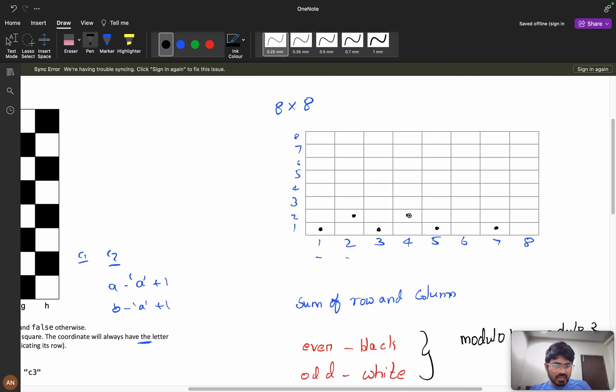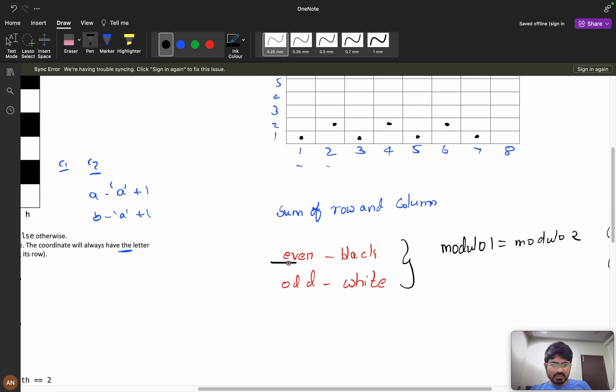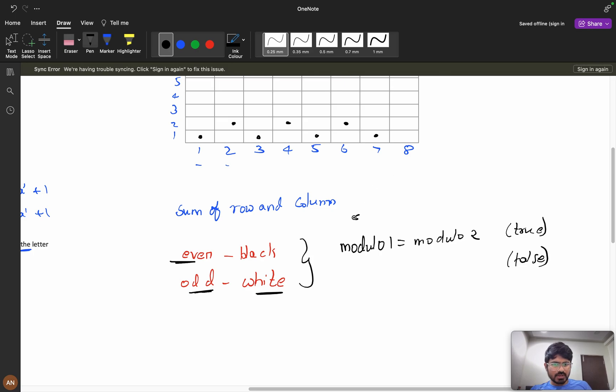4 plus 2, black. 6 plus 2, 8, which is even, black. So all the even cells are black and all the odd cells are white. What I will do is take coordinate1 and coordinate2, do modulo 2. If both modulos are equal, that means if both are 0 or both are 1, then I will return true. If their modulos are not equal, I will return false. It's simple.